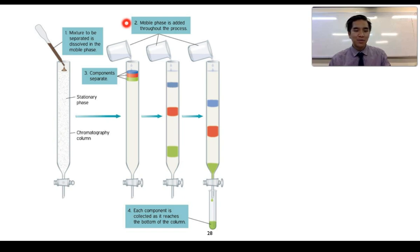As we keep doing that, the components will start to separate because of their differing attractions between the stationary phase and mobile phase. Eventually, the components are going to be collected using a test tube or flask as it reaches the bottom of the column. Once we've collected this particular fraction, we can then go ahead and collect a different fraction in another test tube or flask.